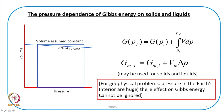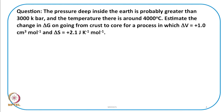When talking about geophysical problems — the interior of the earth — the pressures are huge. There we cannot ignore the volume dependence on pressure; we have to consider volume dependent on both pressure and temperature. Let us look at a numerical problem: the pressure deep inside the earth is probably greater than 3000 kbar and the temperature there is around 4000°C. Estimate the change in ΔG on going from crust to core.